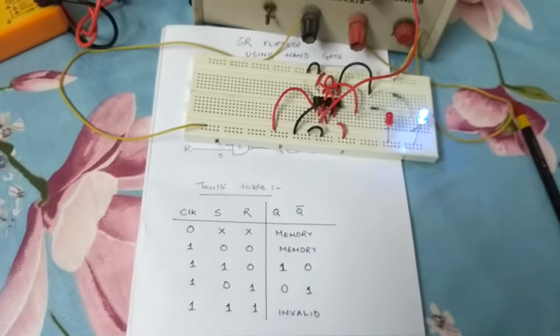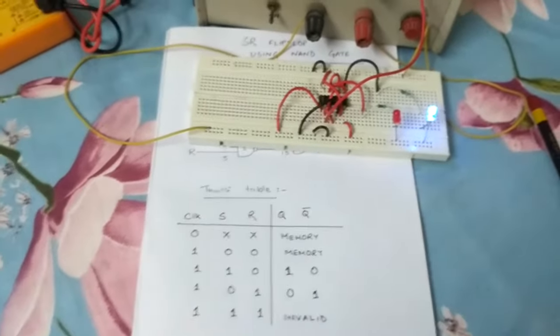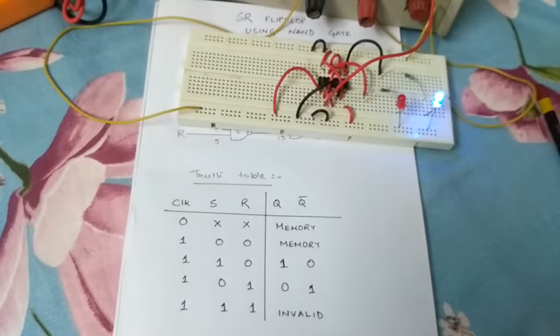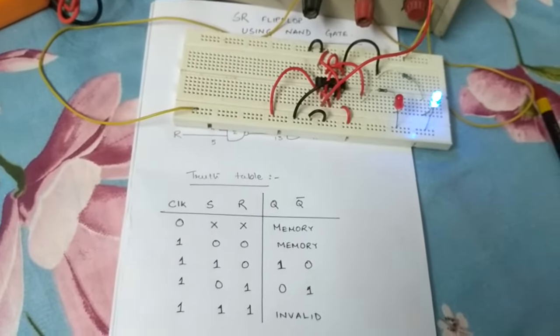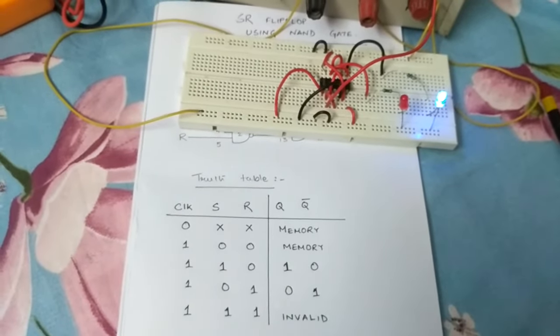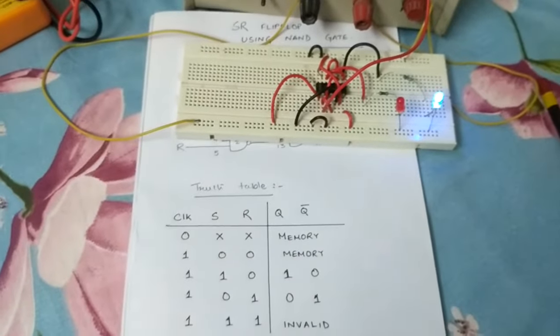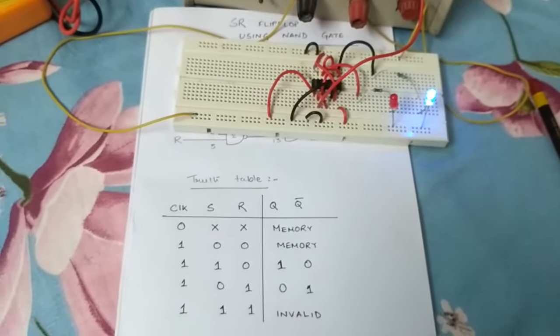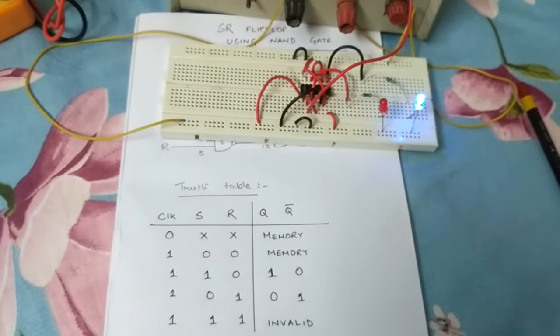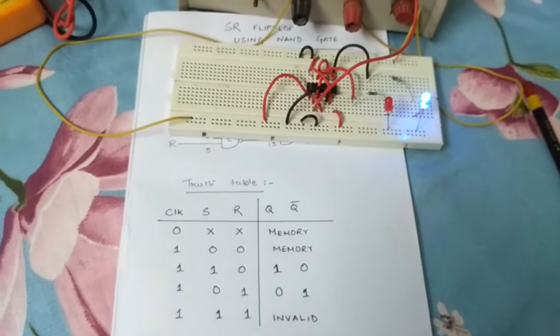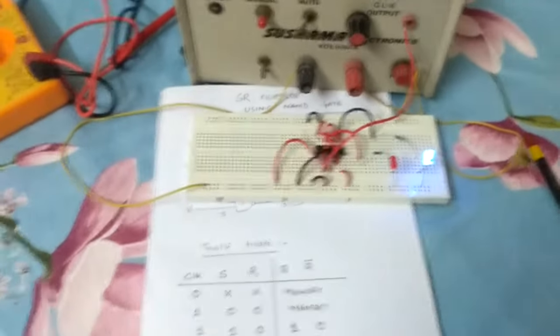So this is how the SR flip-flop with the help of NAND gate operates. You all need this circuit and just check the truth table. I hope it's quite clear now and it's going to benefit you. In our next video I'll show you how to make the D flip-flop and JK flip-flop. If you have any kind of queries you can also ask.